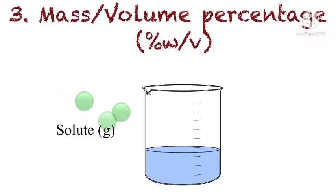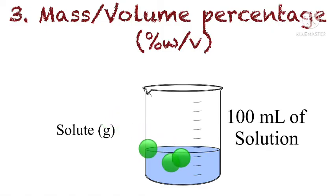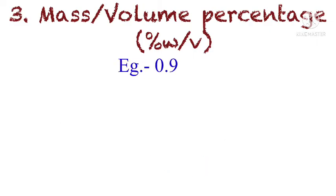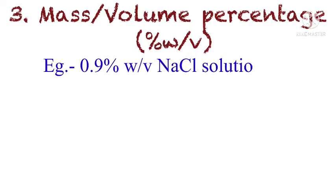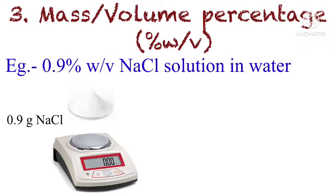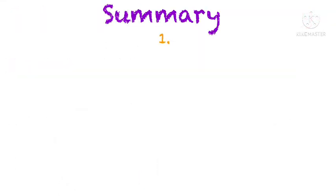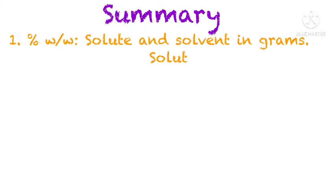The third type is mass by volume percentage, represented by percent weight by volume (% w/v). It is the amount of solute in grams present in 100 ml of solution, where the solute is measured in grams and the solvent in ml. For example, to prepare a 0.9% w/v sodium chloride solution, we weigh 0.9 grams of sodium chloride and dissolve it in 100 ml of water.